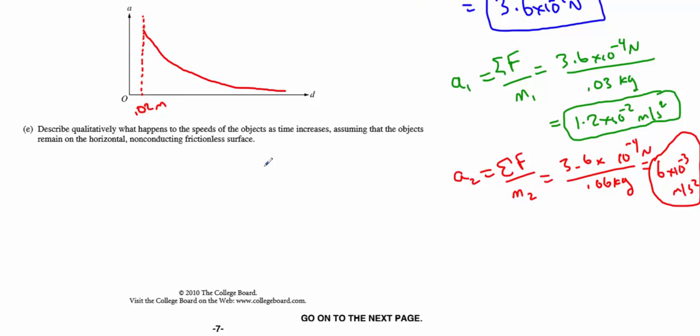And then we want to describe qualitatively what happens at the speed of the object as time increases, assuming the objects remain on the horizontal, non-conducting, frictionless surface. I see a lot of students kind of mix this kind of problem up because they think the acceleration is decreasing, so eventually that means the objects are slowing down. That's not what that means at all. It means that the rate in which they're increasing speed is decreasing. So really what you should be indicating is that both particles, their speeds will continue to increase as time increases. They will get faster and faster. But the rate in which that increase changes will decrease. So indicate that the speed goes up, but the acceleration goes down, approaching constant velocity at a distance of infinity.